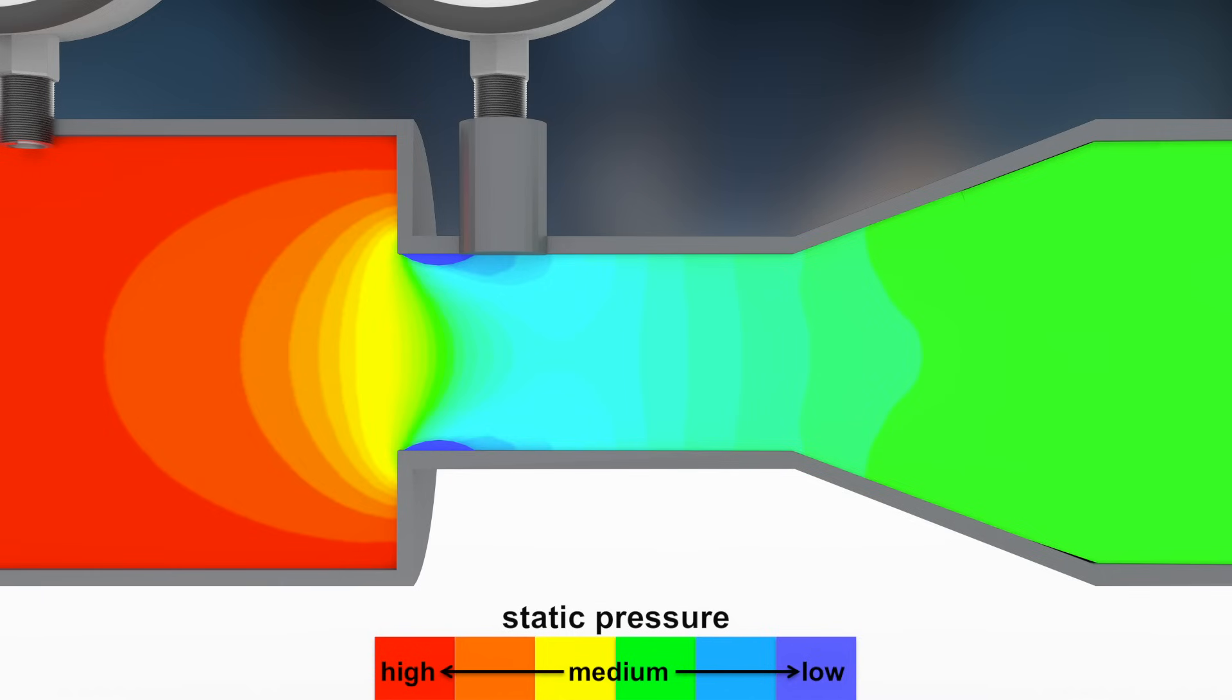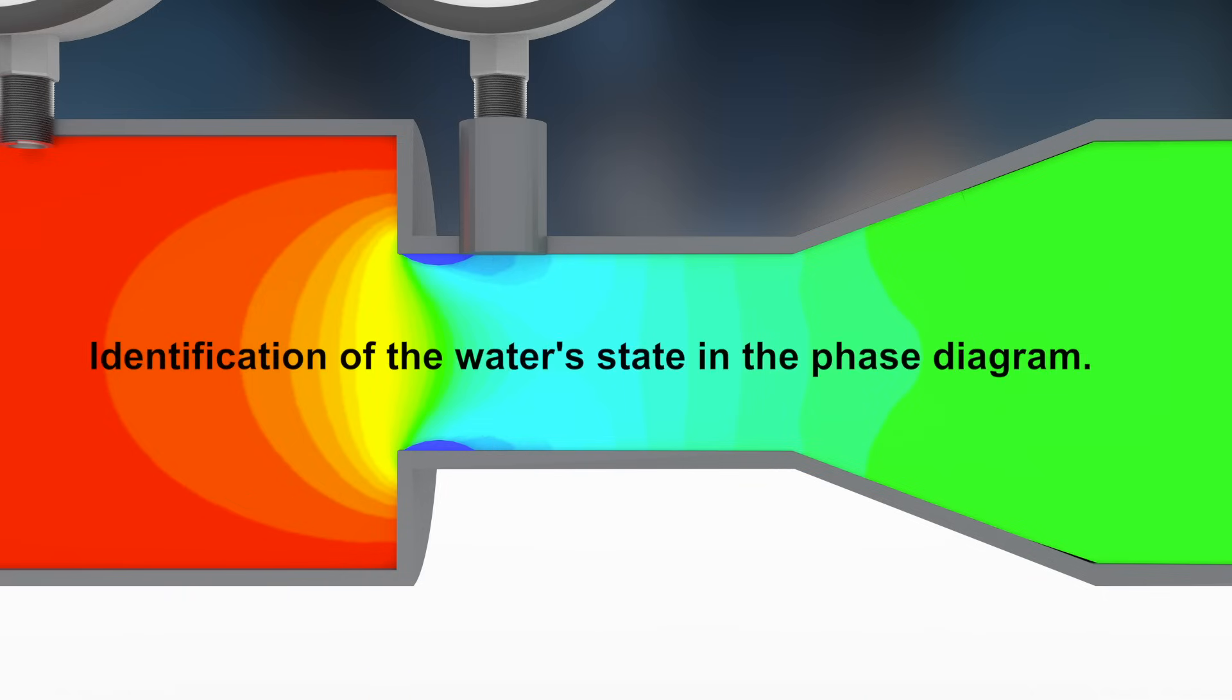The same amount of water per time flows through the pipe with a large cross-section as through the narrow cross-section. Therefore, the velocity is higher in the narrow part and the static pressure is lower. The pressure is especially low at the exposed edge at the inflow side of a narrow part.